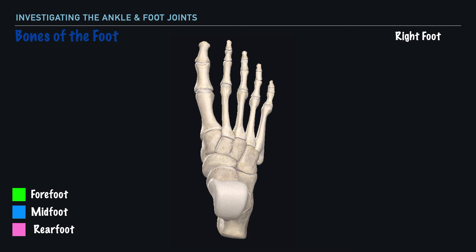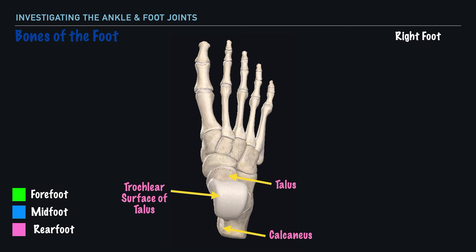In the rear foot, we have the calcaneus, or what we commonly refer to as the heel. And next we have the talus, and what we also refer to as the trochlear part of the talus. We should make a note regarding the trochlear part of the talus — it's because of this design that makes movements like dorsiflexion and plantarflexion possible. Now moving up to the midfoot, we have a group of bones called the cuneiforms, and within this group we have the medial, intermediate, and lateral cuneiforms.